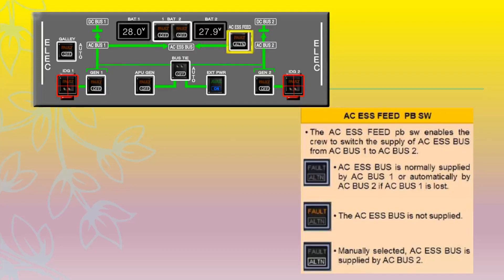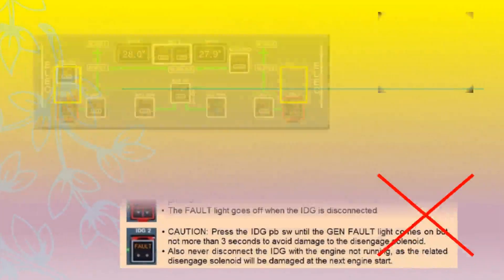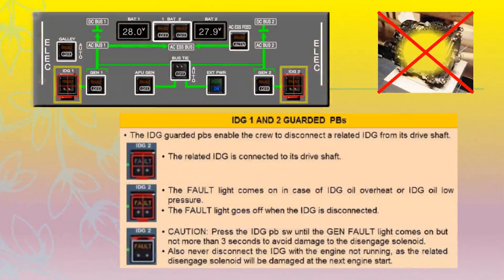The fault light illuminates when the AC essential bus is not supplied. The alternate light comes on when manually selected and the AC essential bus is supplied by AC bus 2.